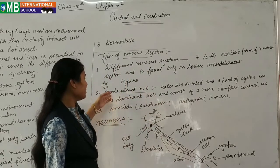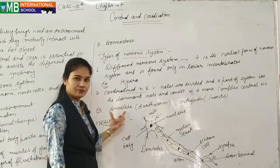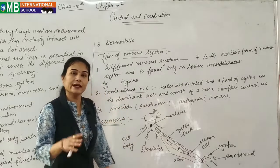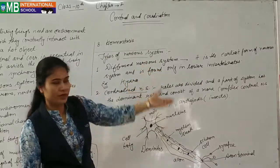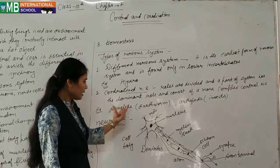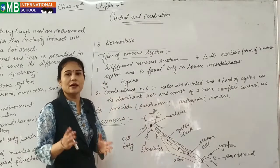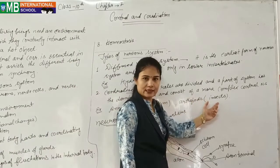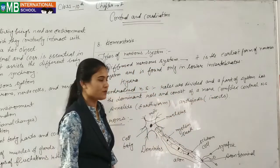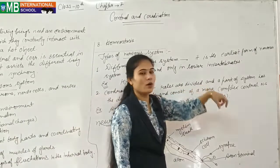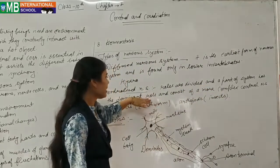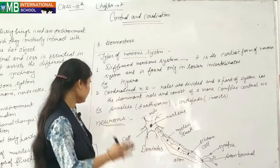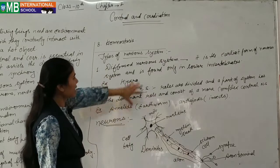Examples in reference to the centralized nervous system include annelids — the simplest example being earthworm — and arthropods, for example insects. These organisms have a more complex central nervous system compared to the diffuse nervous system, meaning they have a complex body structure. Later, when we discuss biodiversity, I will explain the different categories of lower and higher invertebrates.